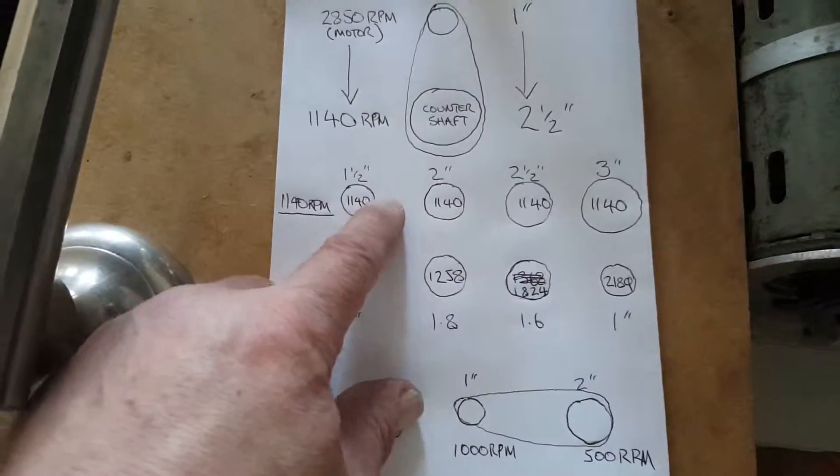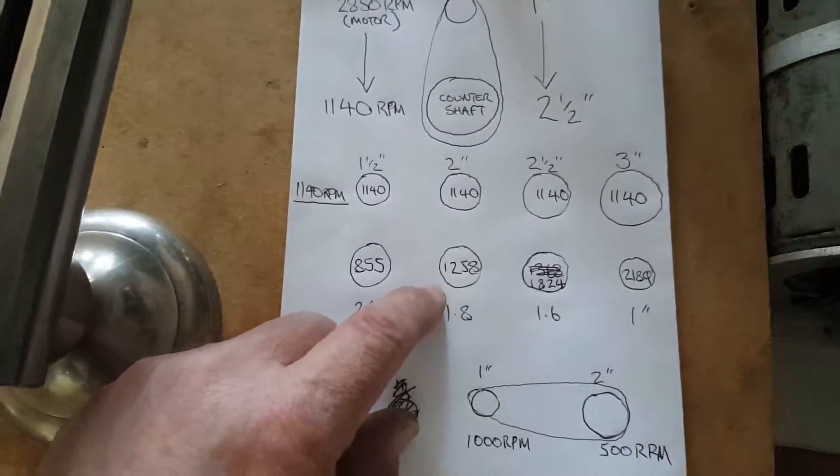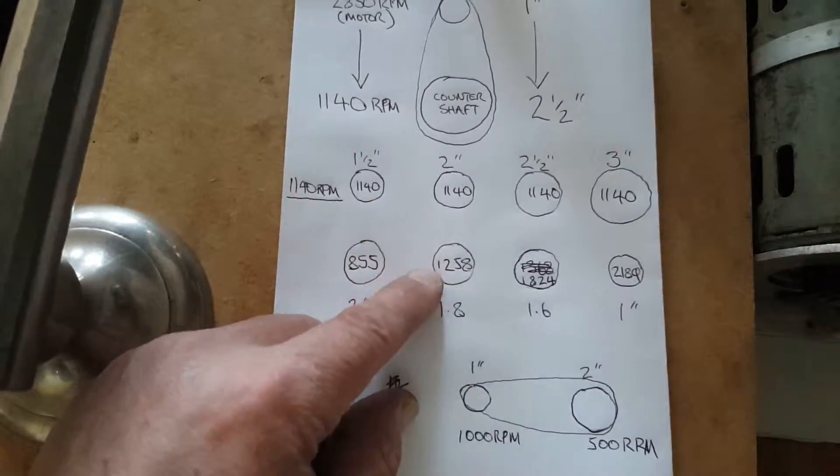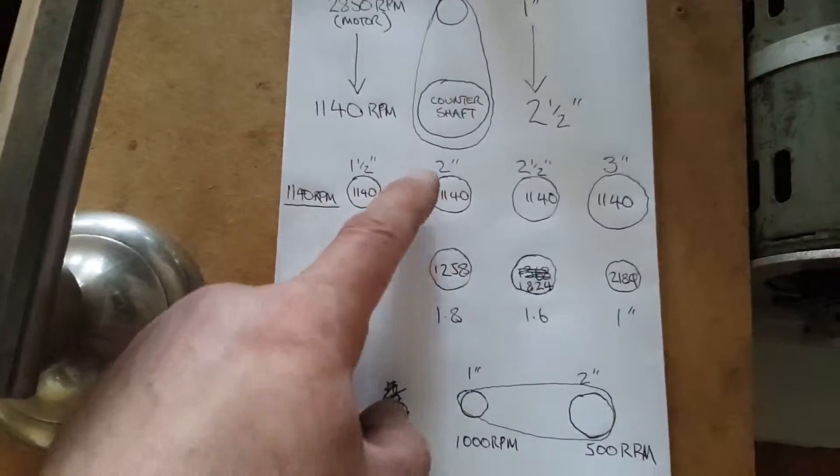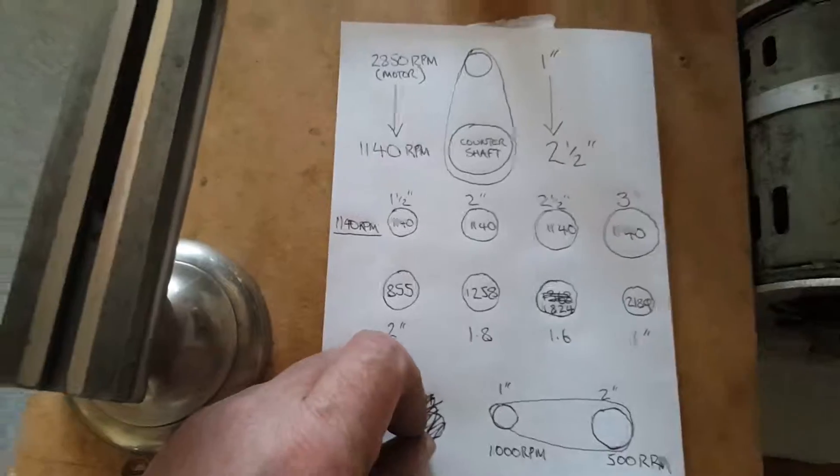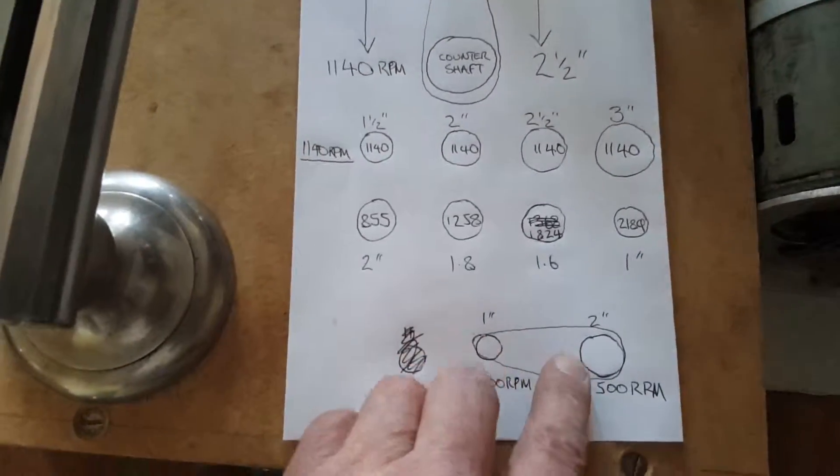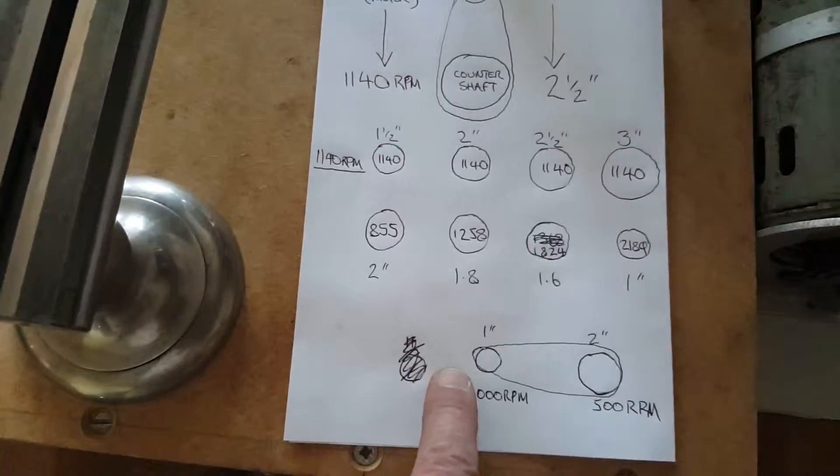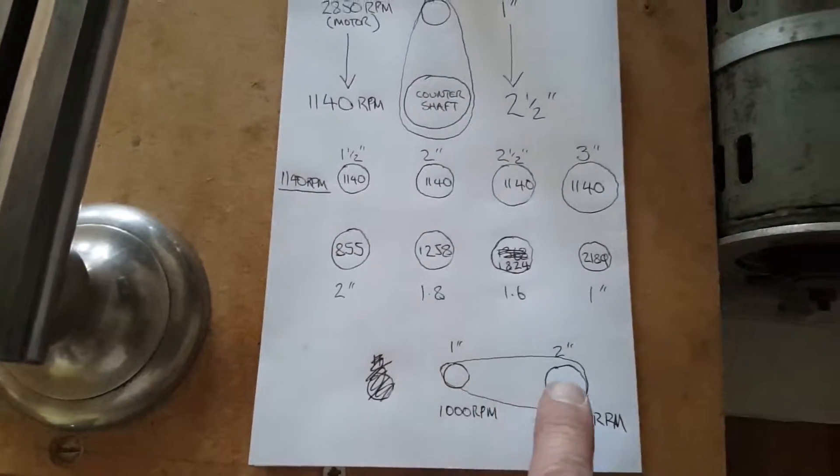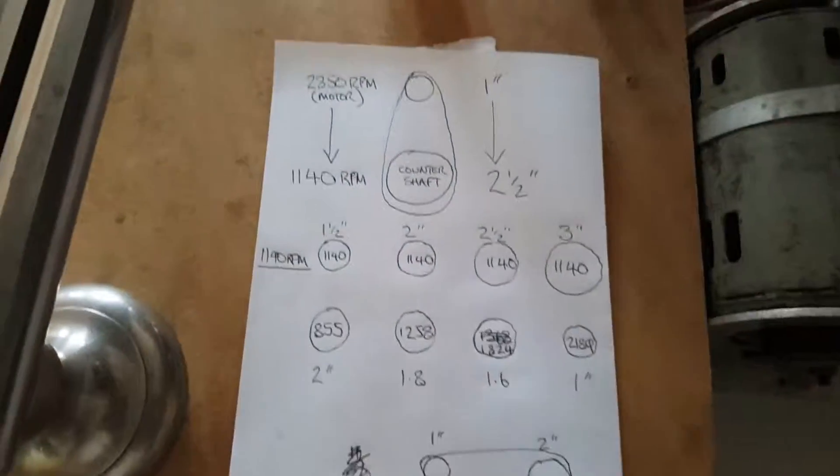And then exactly the same. A 2 inch pulley to a 1.8 inch will increase the RPM. Obviously you've got a bigger pulley to a smaller one, it increases the speed. A bigger pulley to a smaller pulley increases the speed, and a smaller pulley to a bigger pulley decreases the speed.